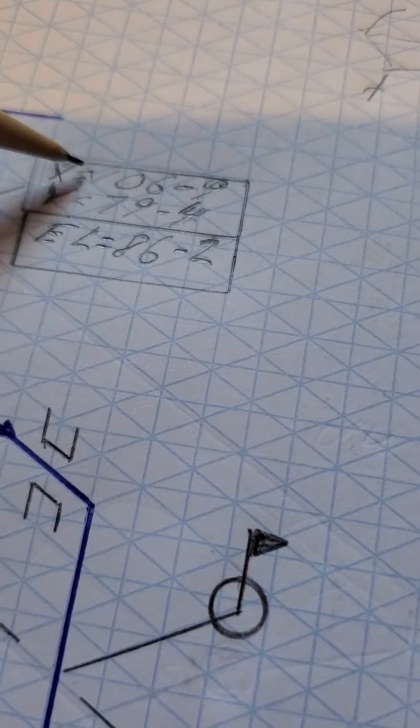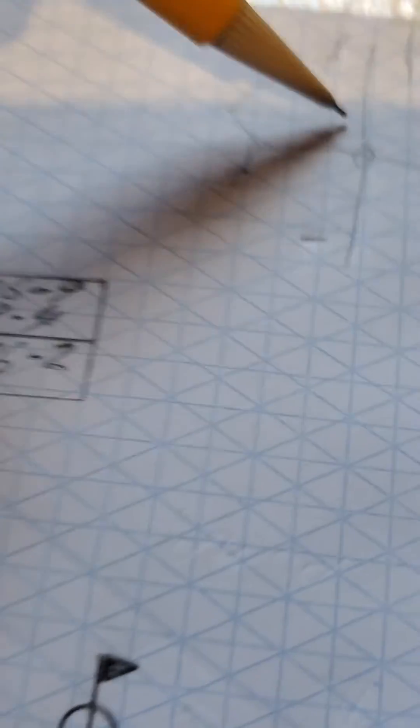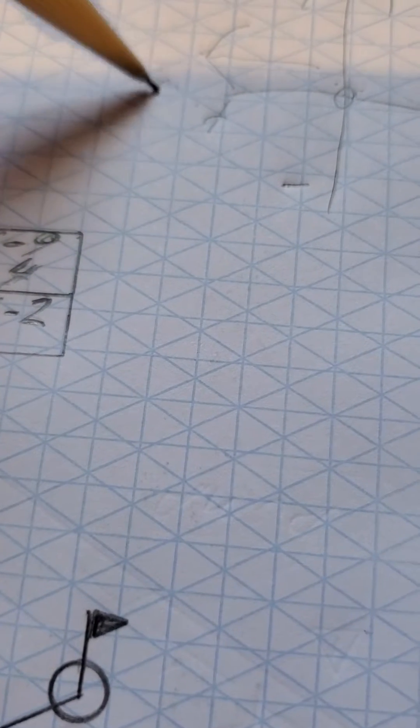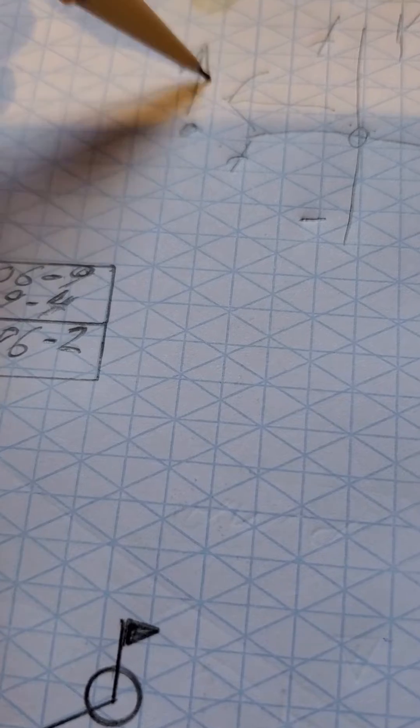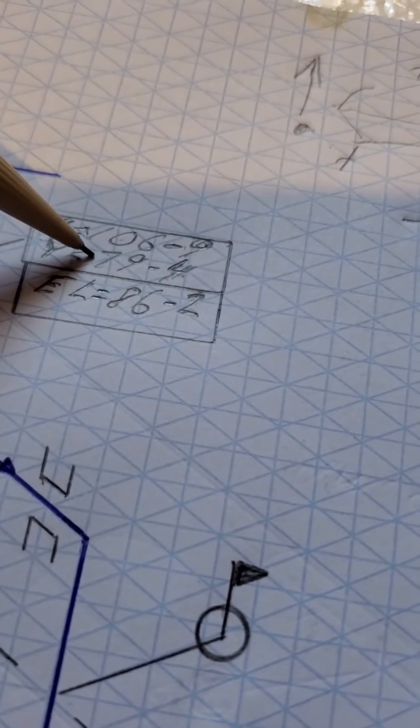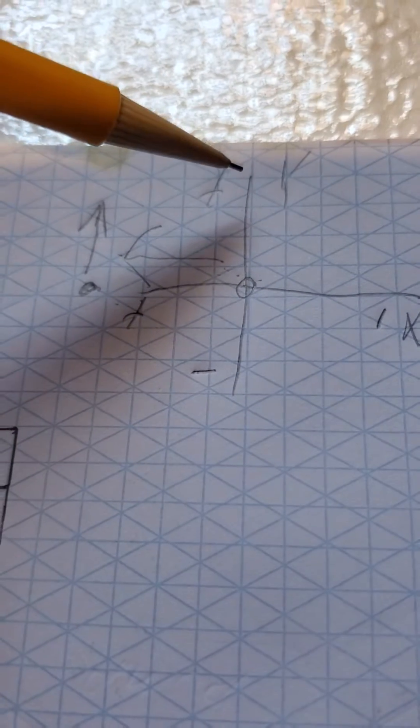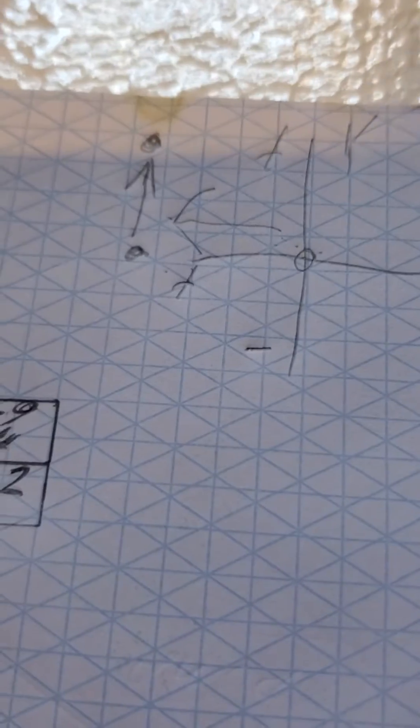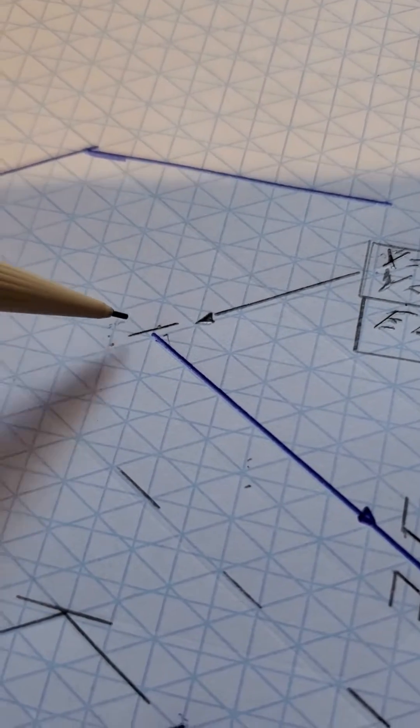Then it tells us the Y direction is 79.4. So this is where we are once we go here. Let's just say we walk all the way over here, all right. Then we got to walk up because the coordinates say positive 79. So if it said negative we'd be walking down, but because it's positive, this is positive Y, we walk up. And this is about where our pipe, this tie-in right here, this is a flanged tie-in.